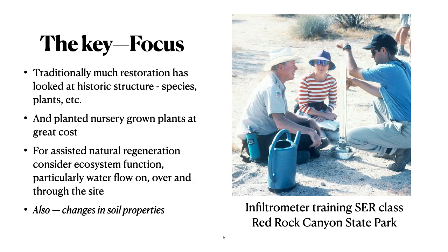The key step is to focus on the site and understand, as much as possible, what the functions are in the area. Traditionally, much restoration looks at historic structure — what species were there, what plants, what were the distributions — and in many cases has planted nursery-grown plants at great cost and, sadly, limited success. For assisted natural regeneration, we want to consider ecosystem function, particularly the water flow on, over, and through a site.